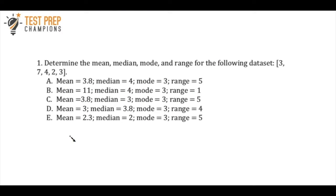The first question says to determine the mean, median, mode, and range for the following data set: 3, 7, 4, 2, and 3. This is a topic that's important for math, but this can also come up on social studies and science, so it's important to know how to do these calculations. Pause the video, try to figure this out, and then we'll go over it.